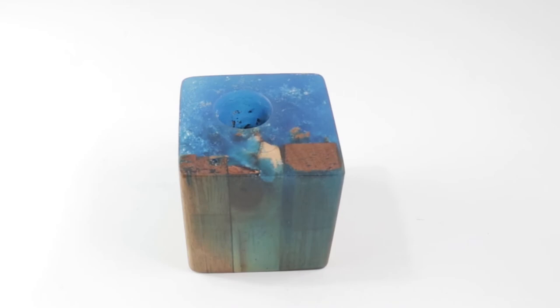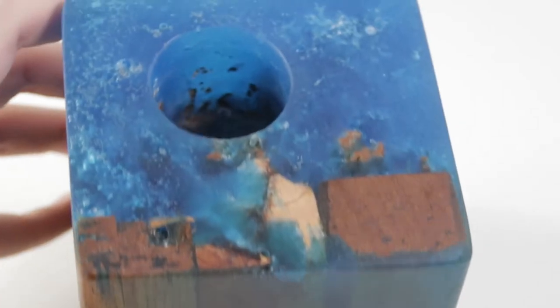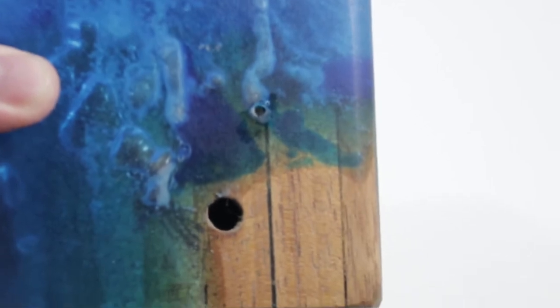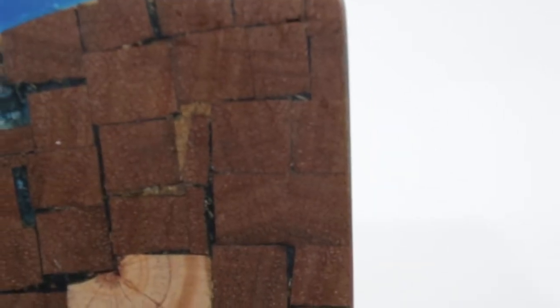After it was dried, I sanded it again, did a little polishing, and made the holes to put the wire and the light bulb. I drilled one hole at the top and one at the side. As you can see here, it doesn't go all the way through.